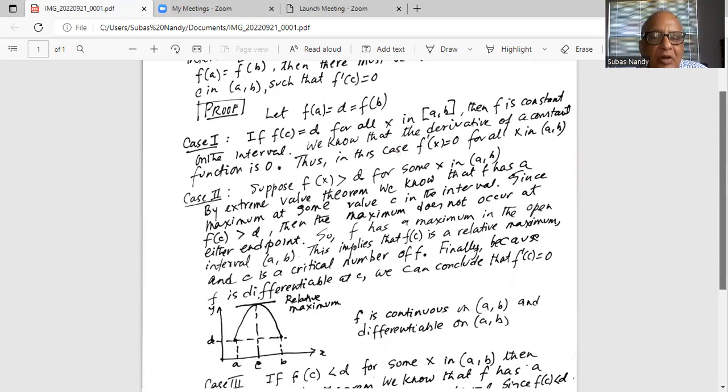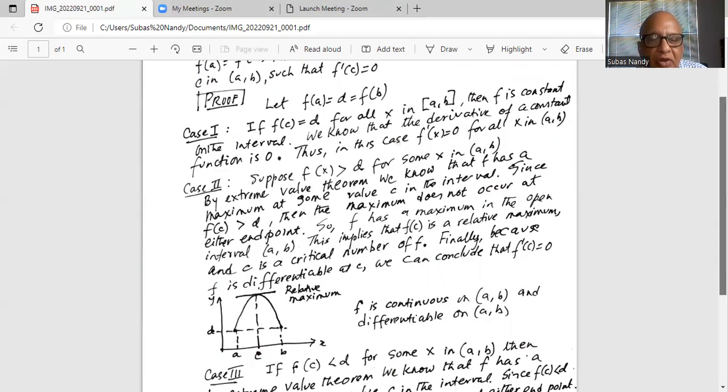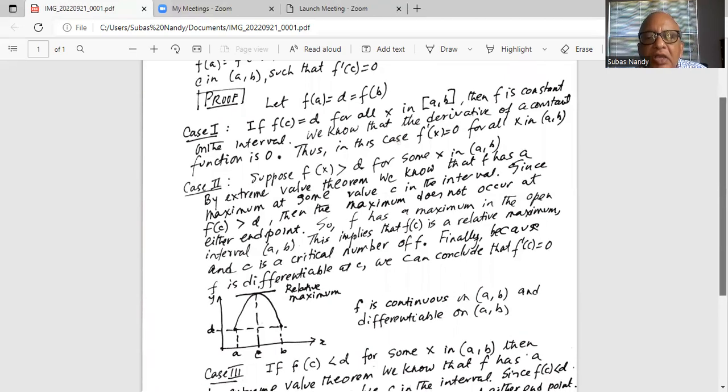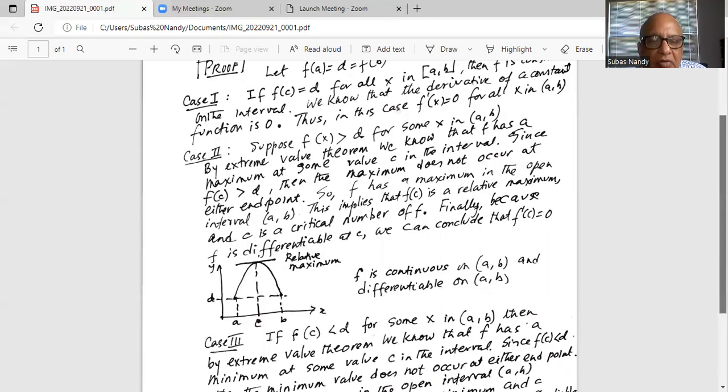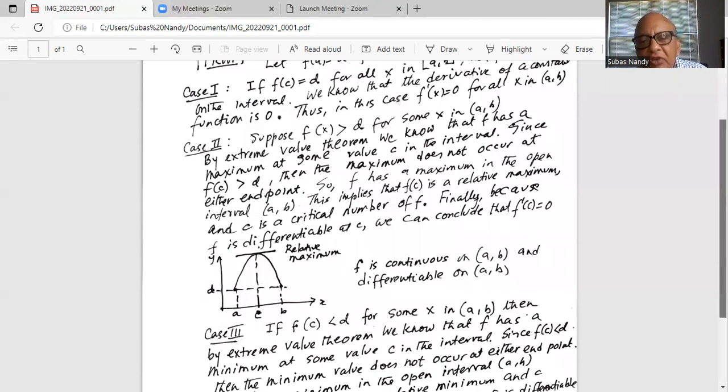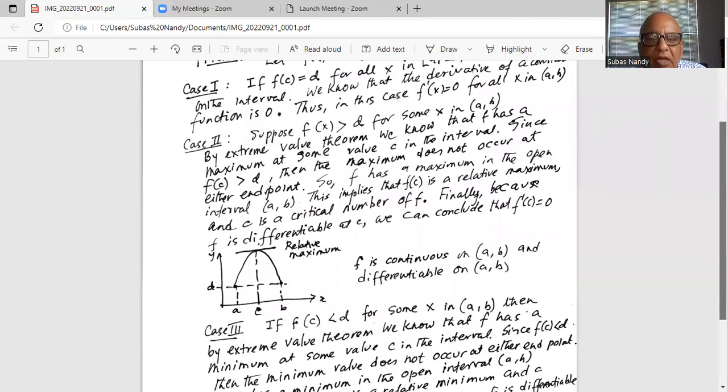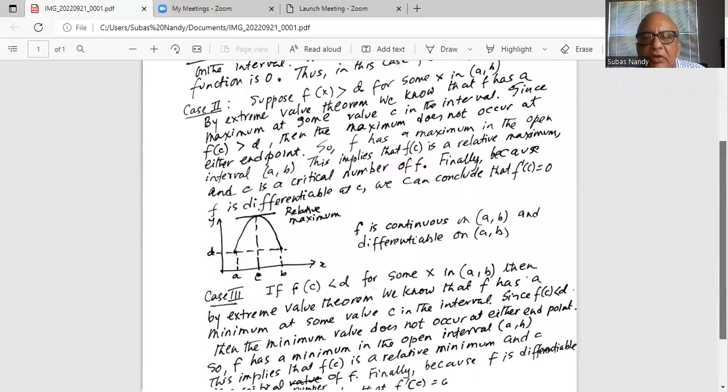This implies that f(c) or function value at x equals c is a relative maximum, and c is a critical number of f. Finally, because f is differentiable at c, we can conclude that f prime at c is equal to 0. So we show it in the diagram: the functional value at x equals a and x equals b is d on the vertical axis, and the relative maximum occurs at the point x equals c, but the functional value is f(c), which is greater than d. So if f is continuous on [a, b] and differentiable on the open interval (a, b), that's case 2 when f(x) is greater than d.